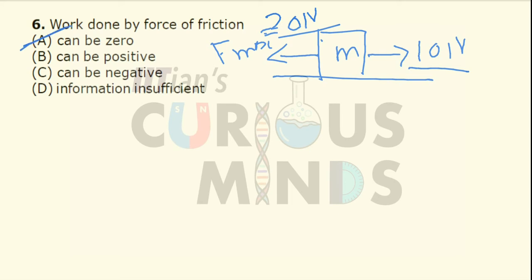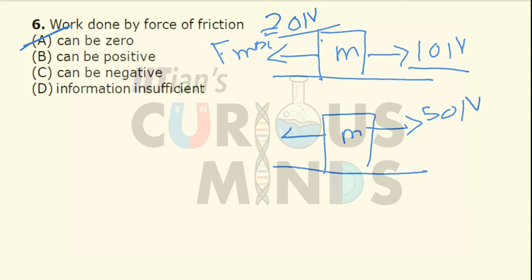Now let us see the second case. If I take the same example and apply 50 Newton force, the maximum static and kinetic frictional force are the same. In this case the frictional force acts in the left-hand side direction but the displacement will be in the right-hand side direction, so the work done will be negative. So option C can also be the answer.